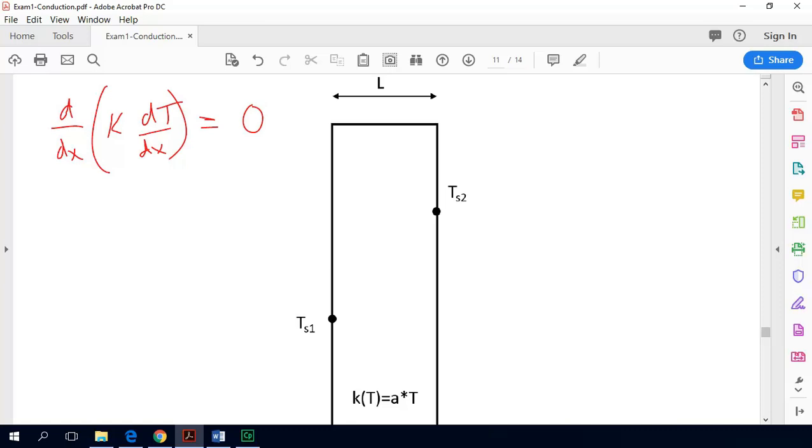So neglecting all those terms that I just mentioned we get this pretty simple form of the equation. So normally when you have constant thermal conductivity you can pull k out of the equation. However, we can't do that because we are told that our thermal conductivity varies with temperature. So we are going to keep this in the derivative for the time being.